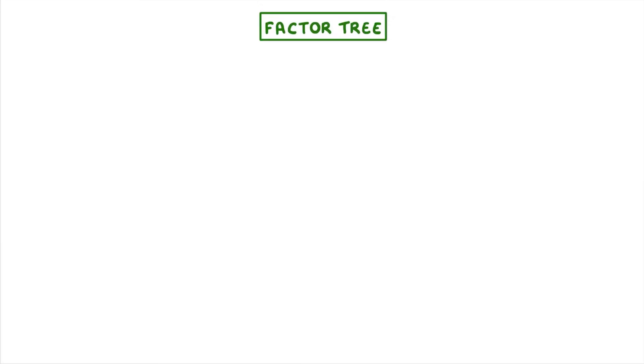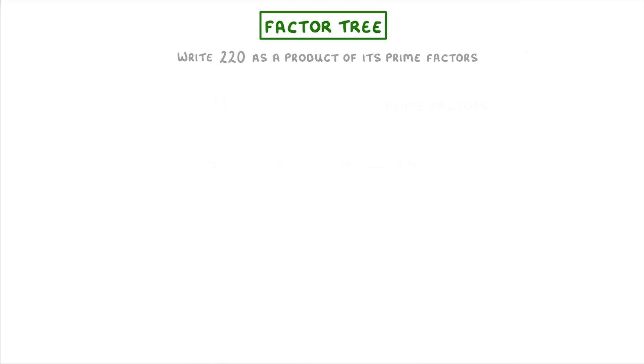If you want to find the prime factors of more complicated numbers, like you might need to in the exam, you'll need to use a method called a factor tree. To understand how these things work, let's imagine we were asked to write 220 as a product of its prime factors. The first step is to write the number whose prime factors you're trying to find, so 220, at the very top of the page.